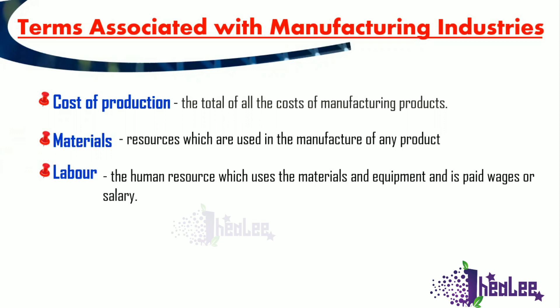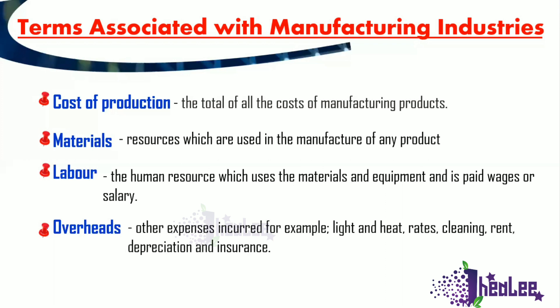The next cost associated with cost of production is overheads. Overheads speak to other expenses incurred — for example, lighting, heating, rates, cleaning, rent, depreciation, insurance, janitorial wages, security costs, etc.